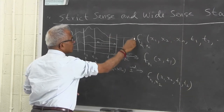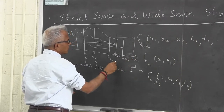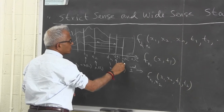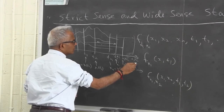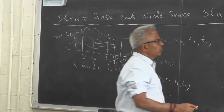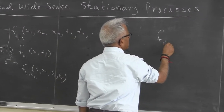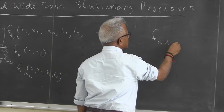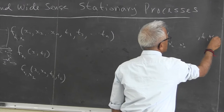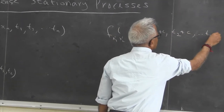Instead of tn you see tn plus c — these are new random variables. I'll call them x1 prime, x2 prime, ..., xn prime. So these variables x1 prime, x2 prime, ..., xn prime correspond to t1 plus c, t2 plus c, ..., tn plus c.